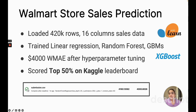For my machine learning project, I worked on predicting Walmart store sales based on historical sales data. The data consisted of over 420,000 rows and 16 columns. I trained linear models, random forests, and gradient boosting models. The best model after hyperparameter tuning was random forest, which provided a weighted mean absolute error of around $4,000, landing me in the top 50% on the Kaggle leaderboard.